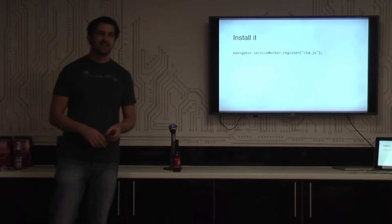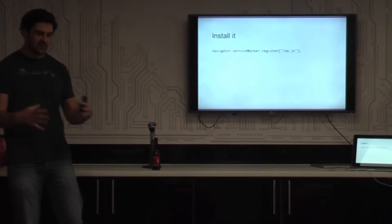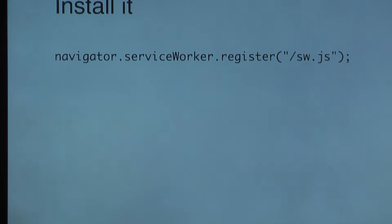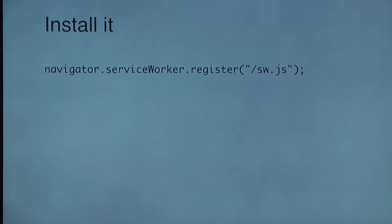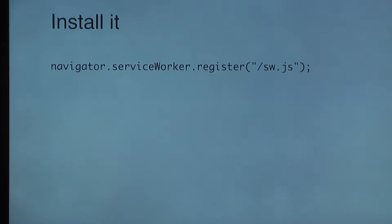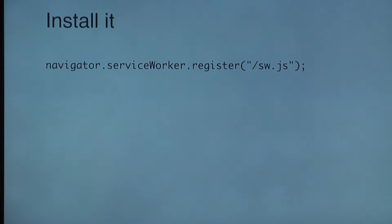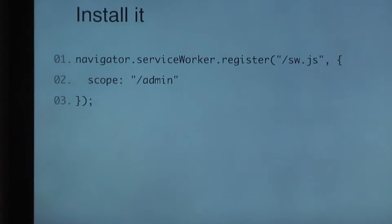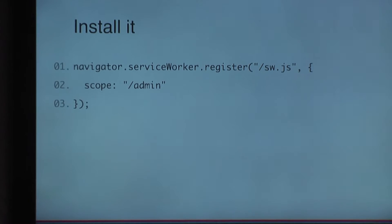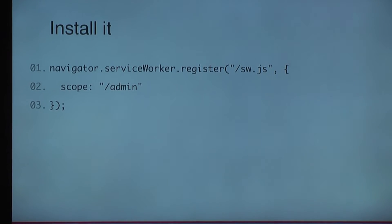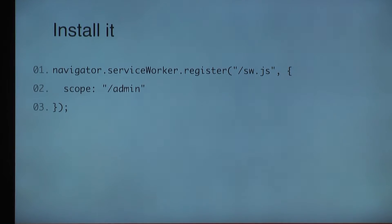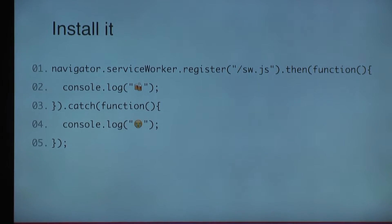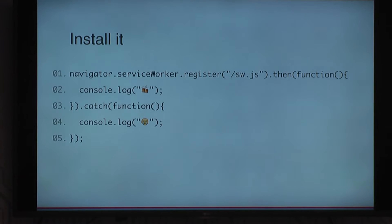When I say it is a script that intercepts network requests, it is a script that runs outside of the context of the actual page your site is running in — it doesn't have access to a window object, it's completely separate. So you need to install it, you need to register it with the browser. You just call service workers on the navigator object and register the file you want to be that service worker. You can also give it a scope — for example, if you only want it to work on paths starting with /admin.